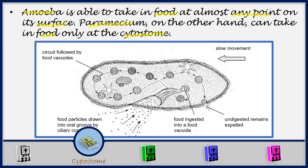Now, the Paramecium has different parts of the body. We have the oral groove — this space here — which is an opening that takes in food. And then it has the cytostome here, which we would call the mouth. So food particles will enter into the oral groove and they will be directed to the cytostome, which is the mouth of the Paramecium. That's how the Paramecium takes in food.